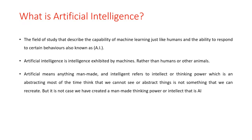Artificial intelligence is composed of two words: the first word is 'artificial' and the second word is 'intelligence.' Artificial means anything man-made, and intelligence refers to intellect or thinking power. It is not something we can normally see or recreate — but we have created a man-made thinking power, which is AI. Artificial intelligence is basically creating intelligent software making machines that are as smart as a human brain — machines with the power to think, analyze, and make decisions.